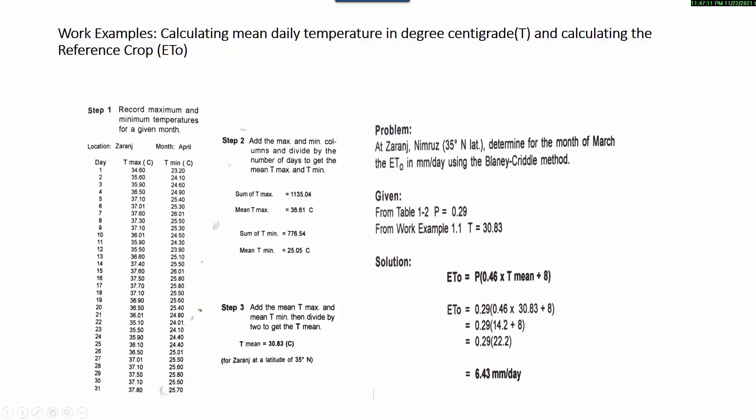In step two, we find and calculate the mean of both the maximum temperature and minimum temperature. For example, the sum of the maximum temperatures divided by 31 gives us 36.61 degrees Centigrade. The same is done with the minimum temperature; we get 25.05 degrees Centigrade.